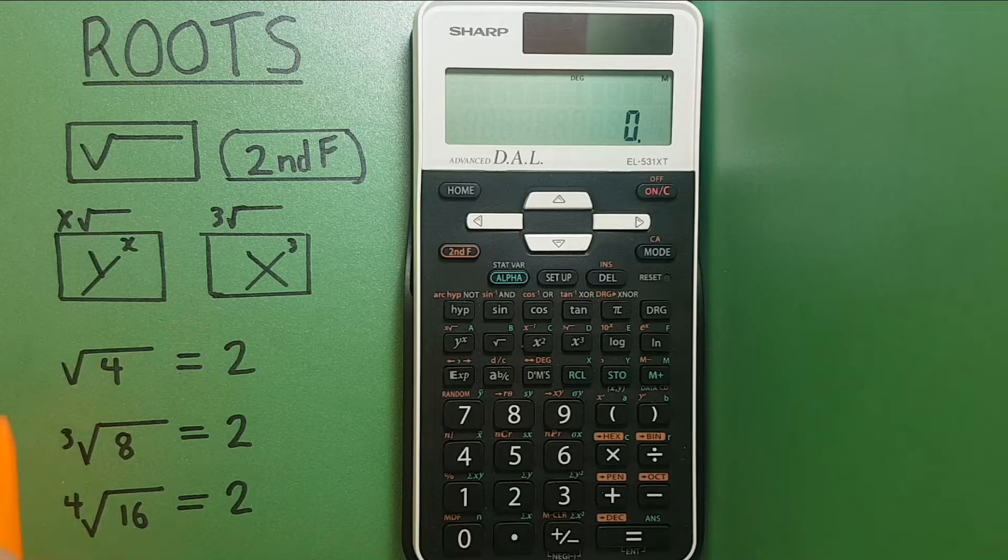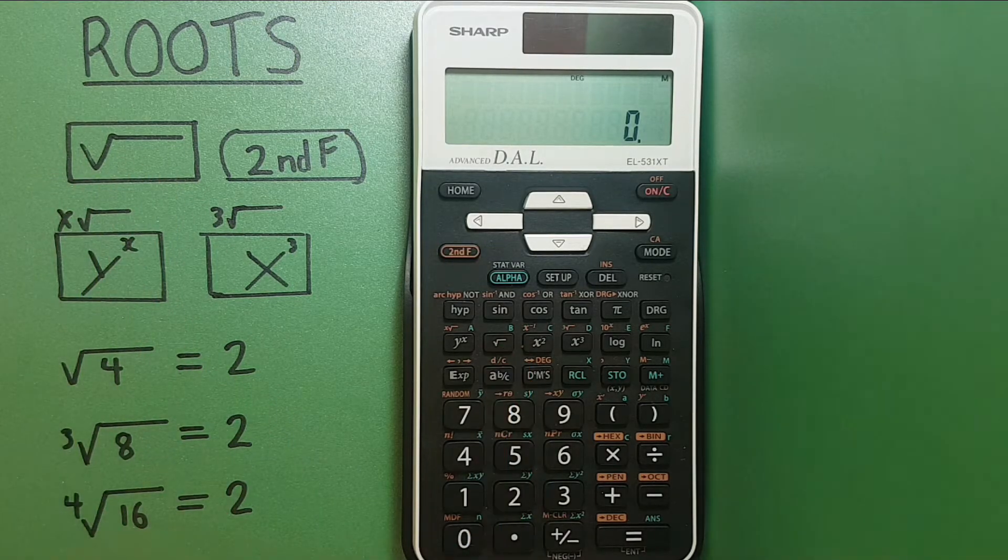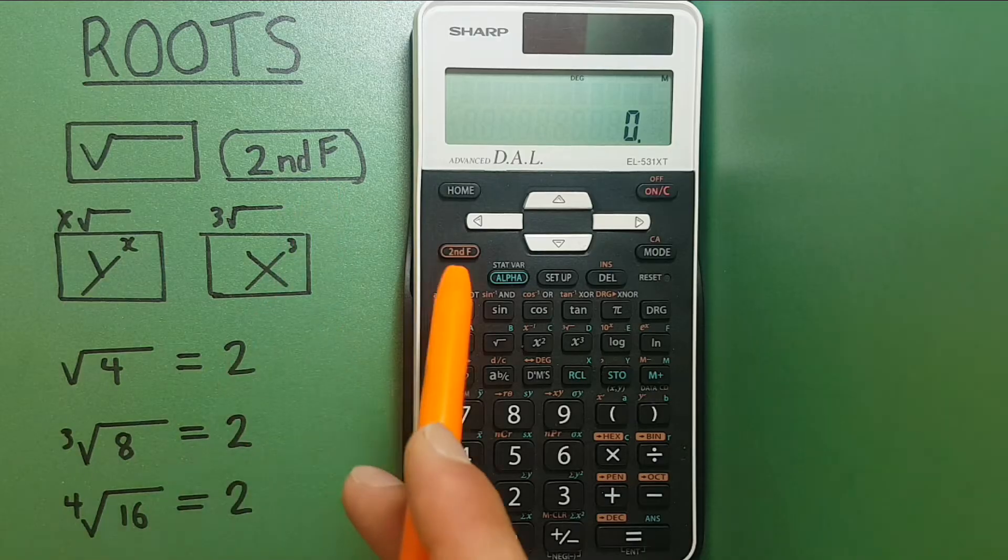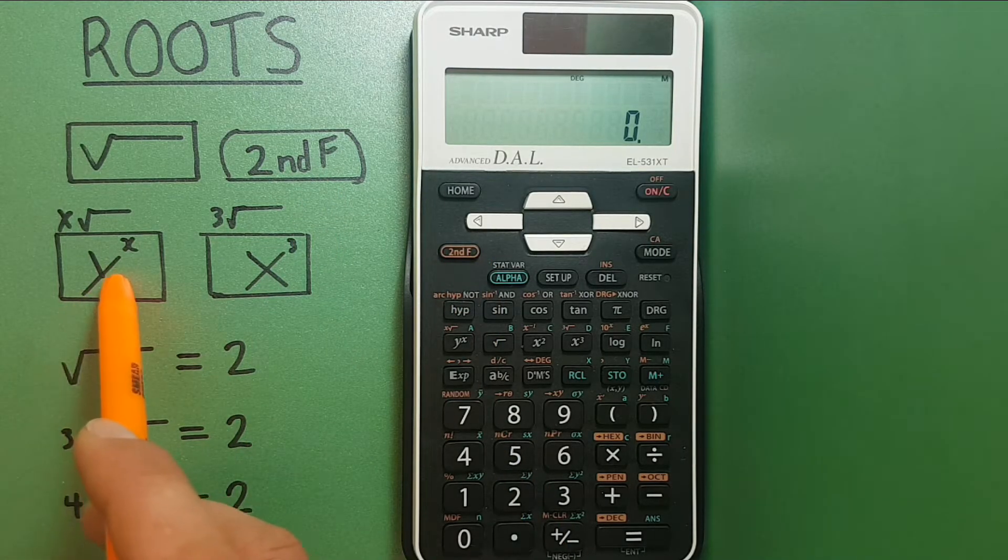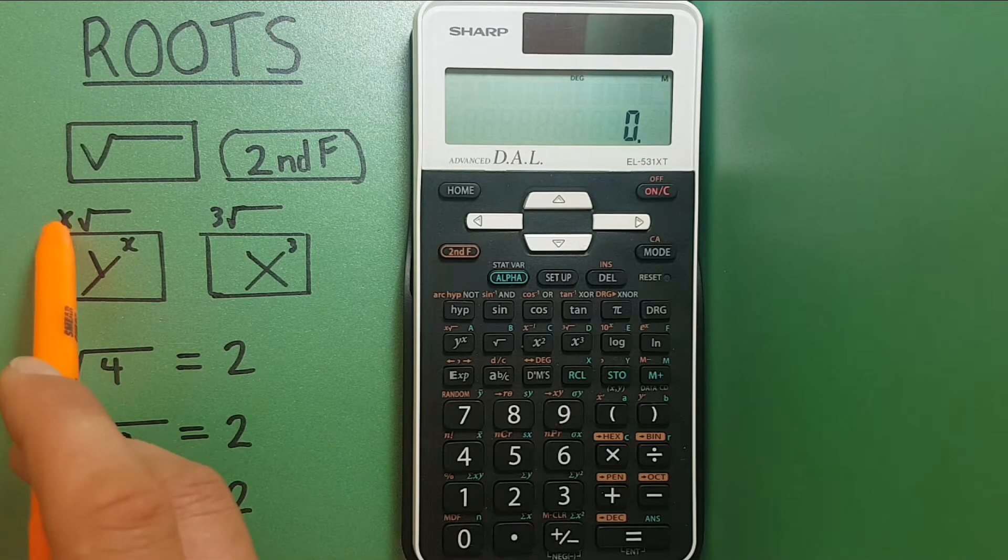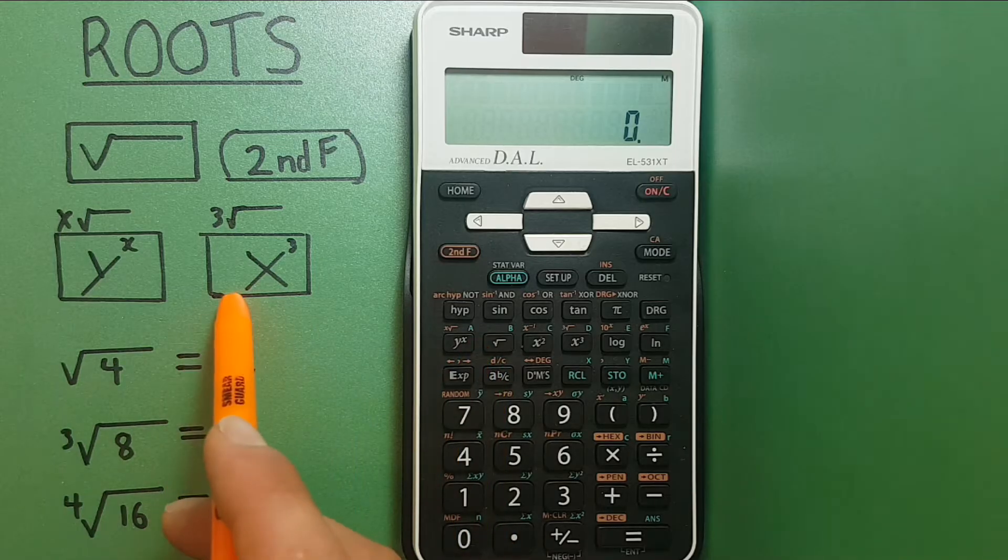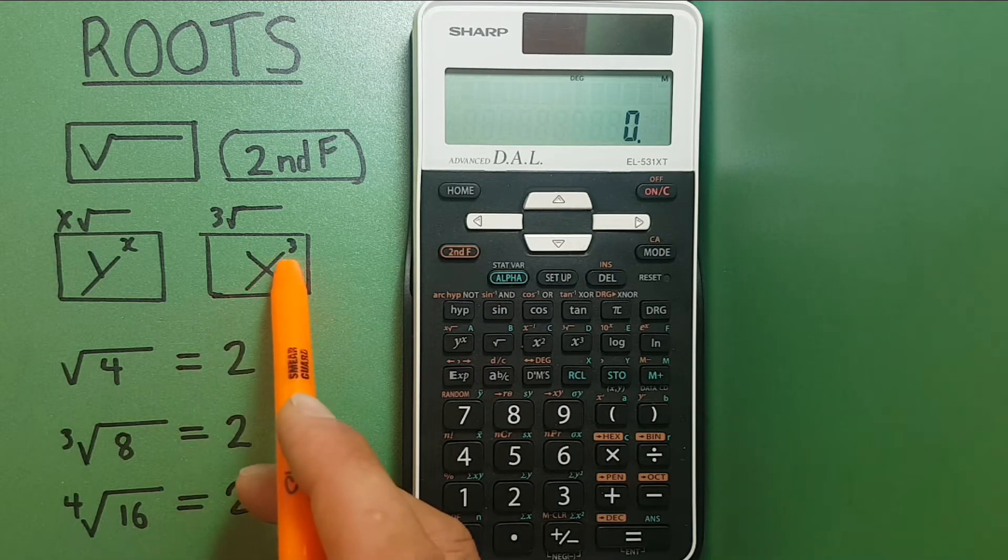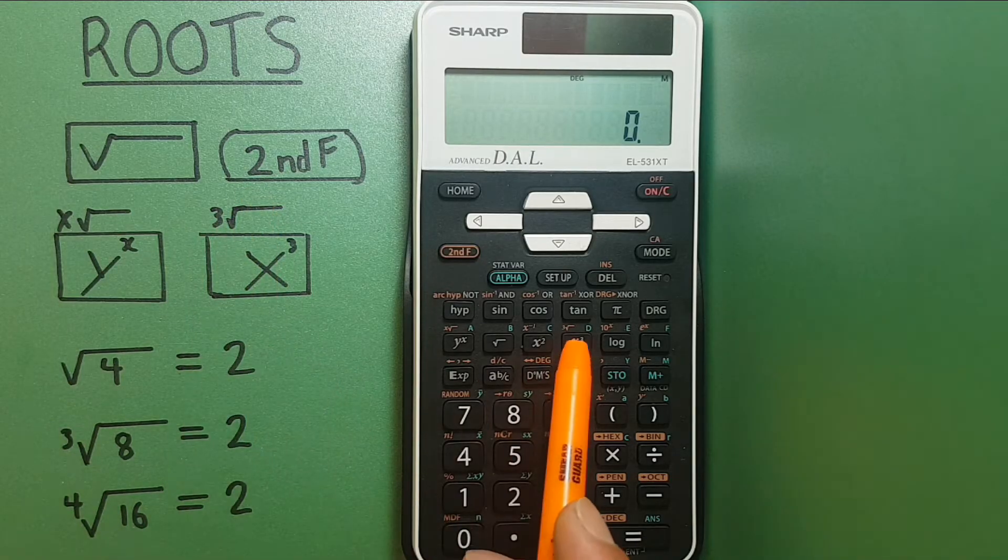To do this we're going to be using the square root key located here, the second function key located up here, the y to the x key with the second function of x root located here, and the x cubed key with the second function of the cube root located here.